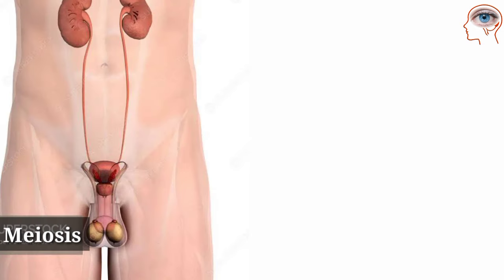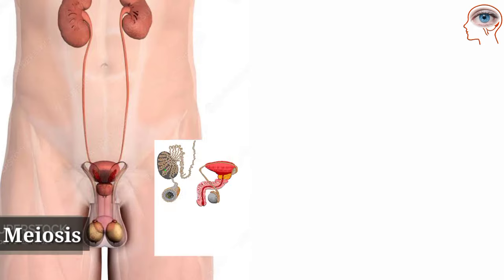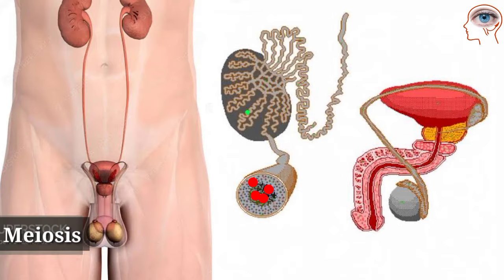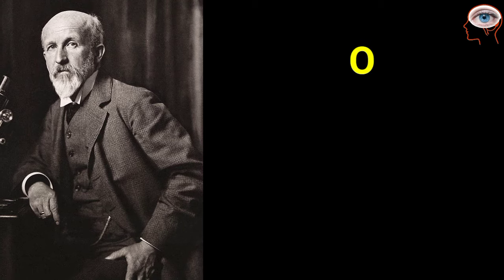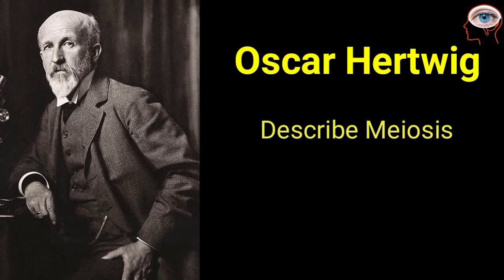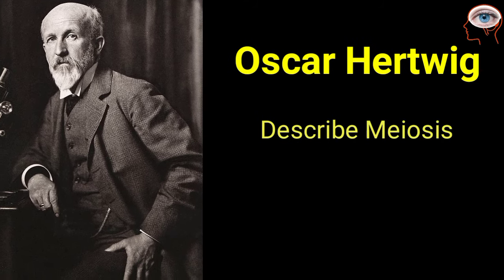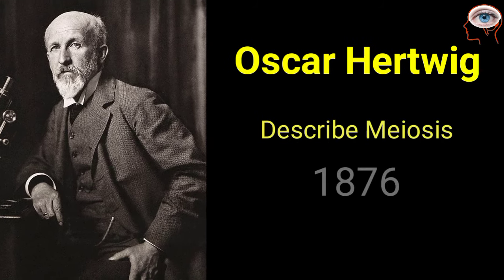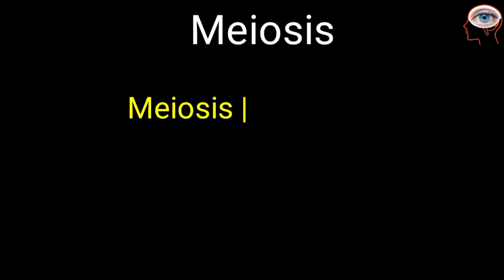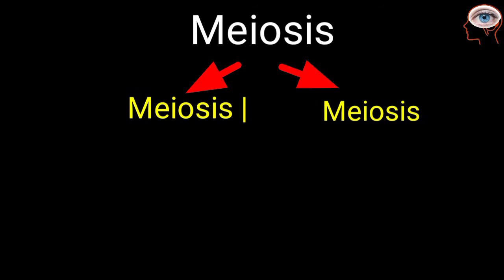Meiosis in males occurs in the seminiferous tubules of the testicle after adolescence. Oscar Hertwig described meiosis for the very first time in 1876. Meiosis is divided into meiosis 1 and meiosis 2.